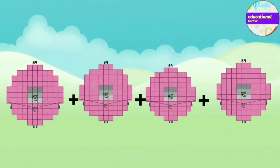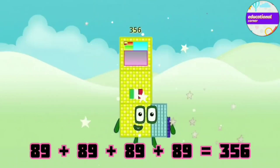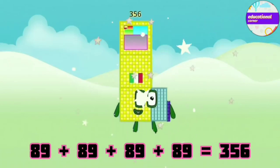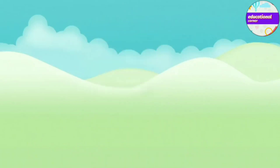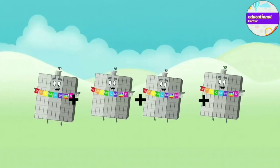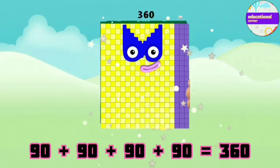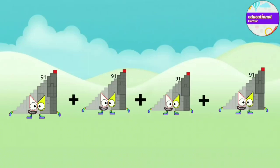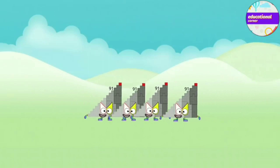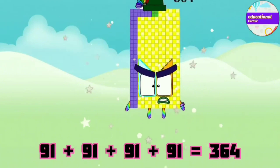89 plus 89 plus 89 plus 89 equals 356. 90 plus 90 plus 90 plus 90 equals 360. 91 plus 91 plus 91 plus 91 equals 364.